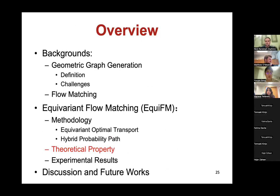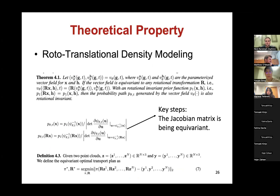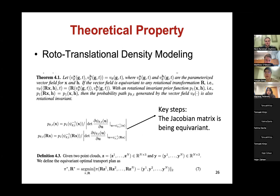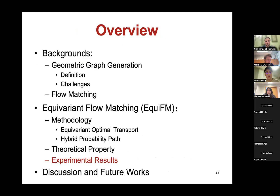We then discuss the theoretical property of equivariant flow matching. We can prove that our model has rototranslational invariant density modeling — the density assigned to each sample is not influenced by rotation or translation transformations. The key step in proving this property is showing that the Jacobian matrix implied by our model is equivariant.